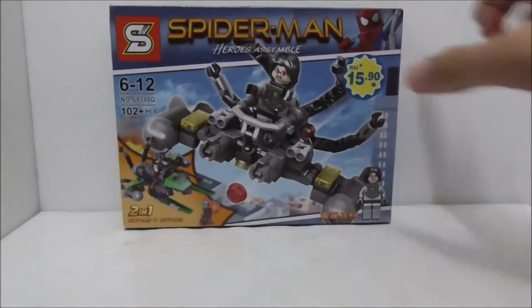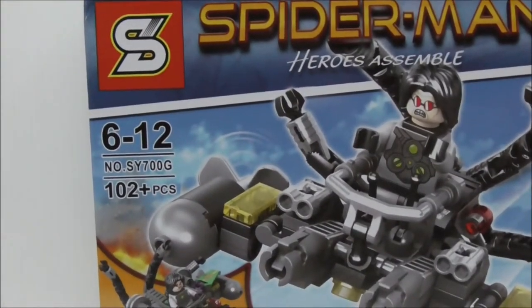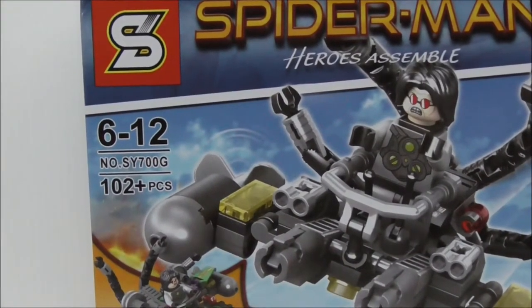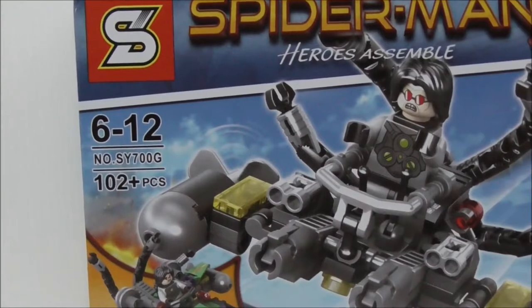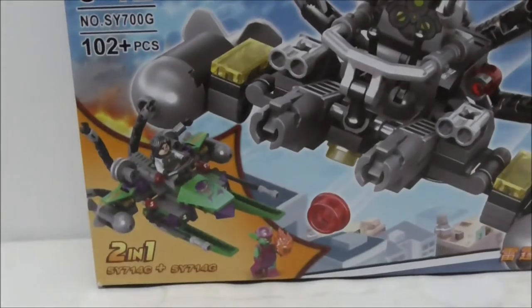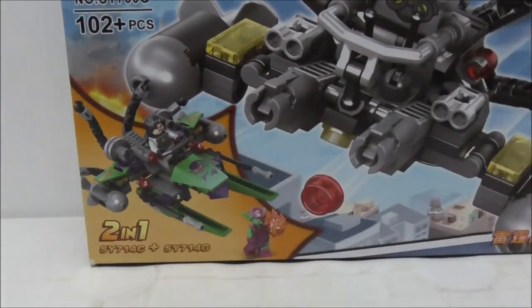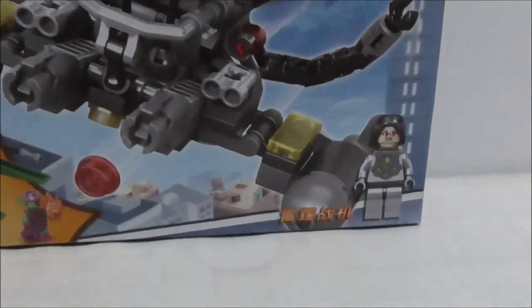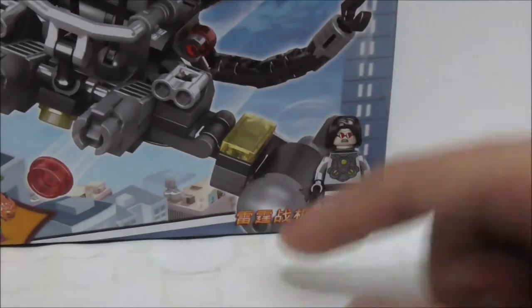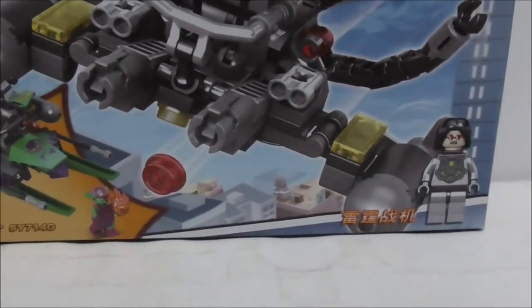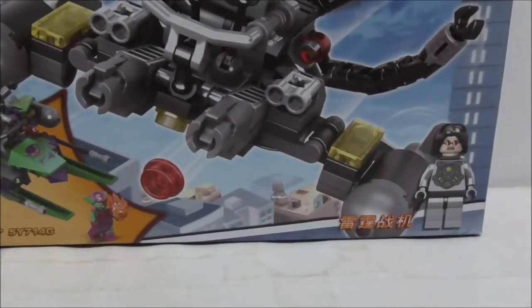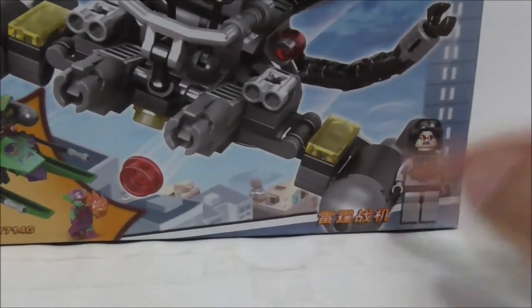So this is the box right here. You can see it's recommended for ages six to twelve and it's set SY700G. It comes with 102 pieces and shows that you can combine it with SY714C. It comes with Doc Ock and the Thunderfighter is what I translated from this one.